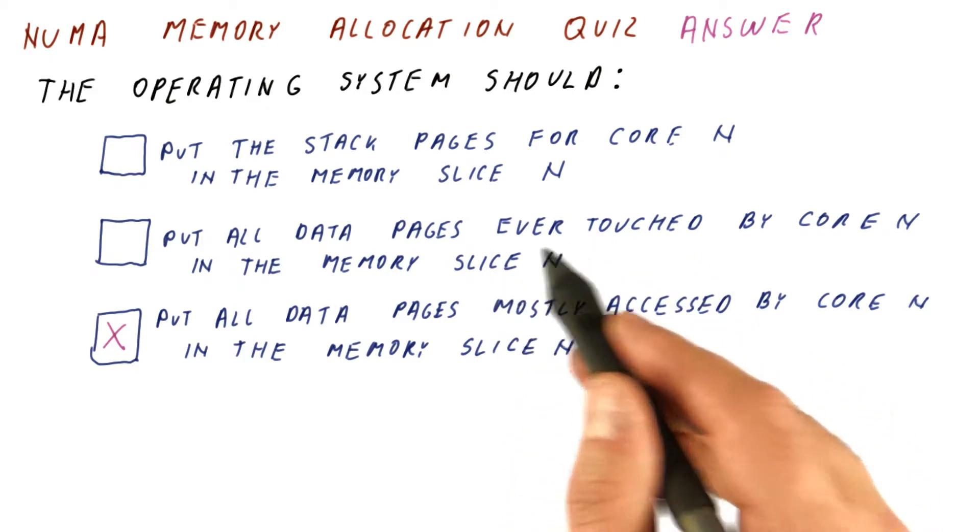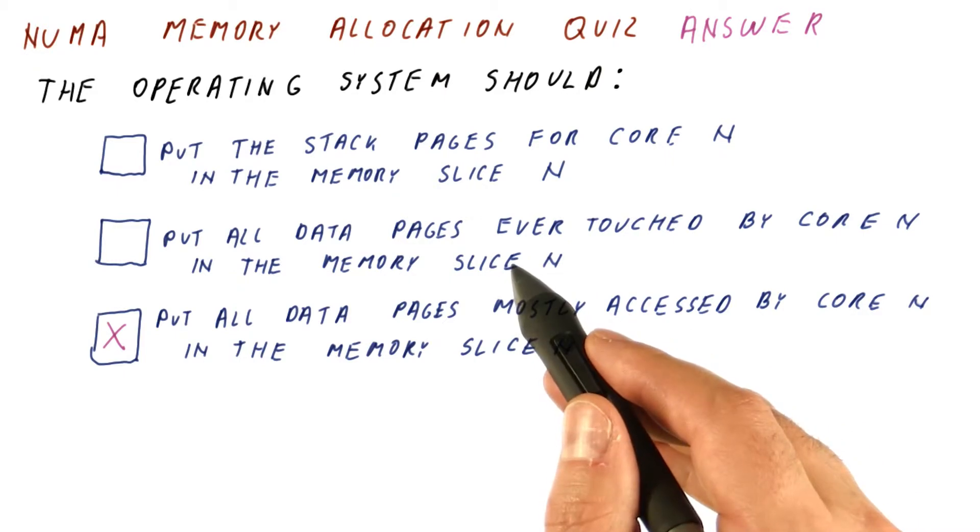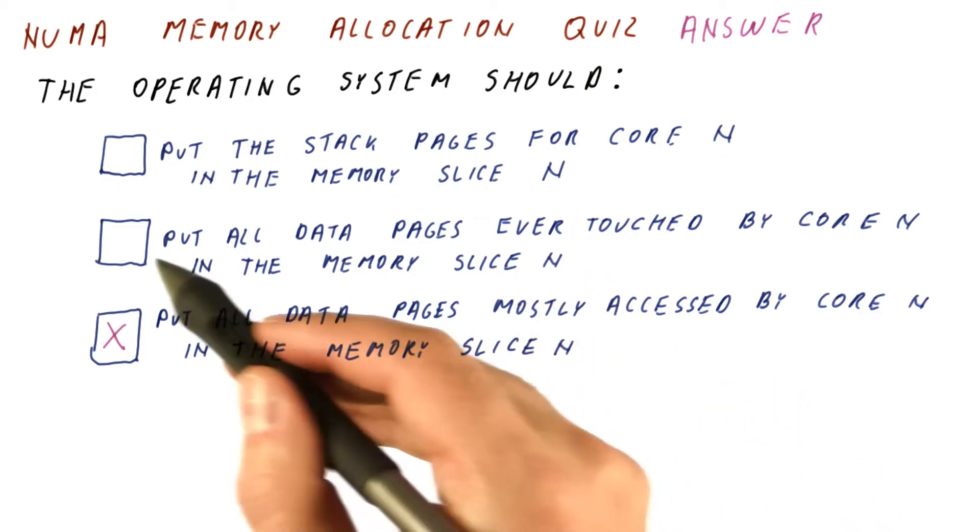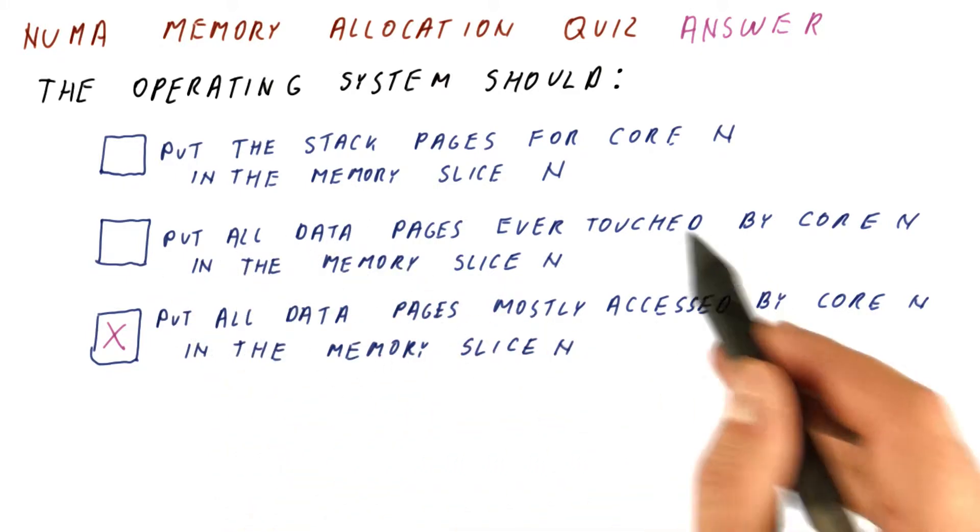And at that point, that memory slice becomes the bottleneck because everybody will be accessing that slice, and the data might not even fit there. So this is not a correct answer.